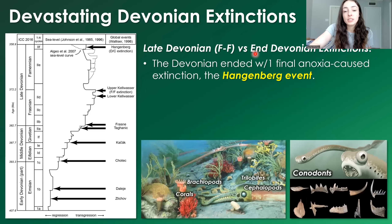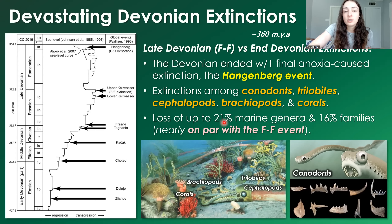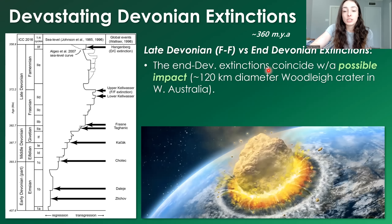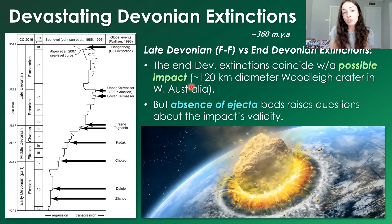The Devonian ended with another final anoxia-caused extinction event around 359 million years ago, just at the end of the period. This event caused extinctions among conodonts, trilobites, cephalopods such as ammonoids, brachiopods, and corals, with loss of up to 21% of marine genera and 16% of marine families — nearly on par with the FF event.